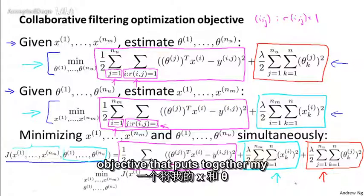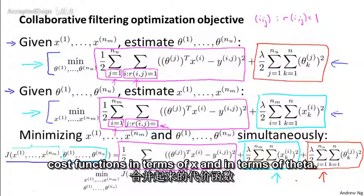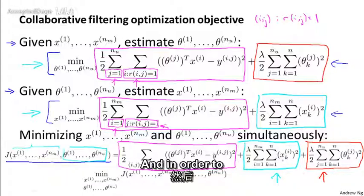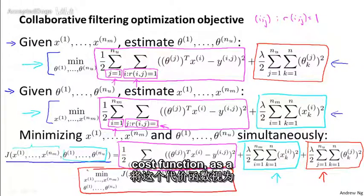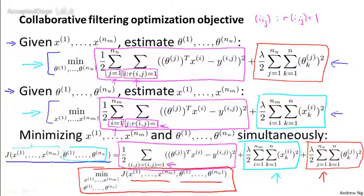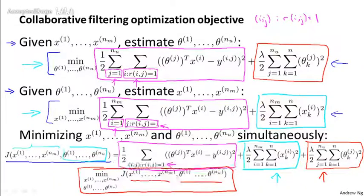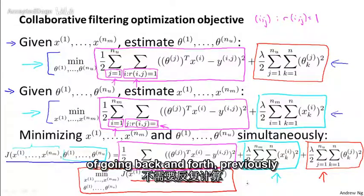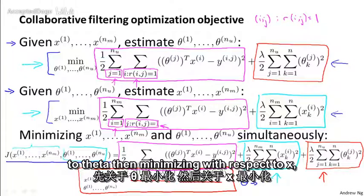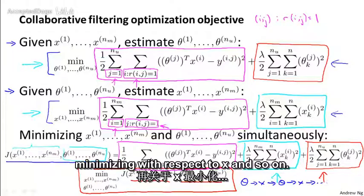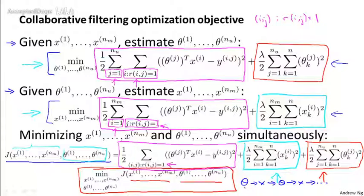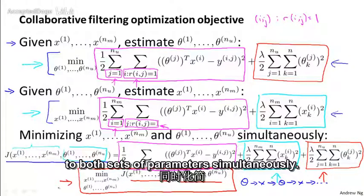So here's an optimization objective that puts together my cost functions in terms of x and in terms of theta. To come up with just one optimization problem, we treat this cost function as a function of both the features x and the user parameters theta, and minimize this whole thing simultaneously with respect to both. The only difference from the older algorithm is that instead of sequentially alternating between minimizing theta and x, we now minimize with respect to both sets of parameters simultaneously.